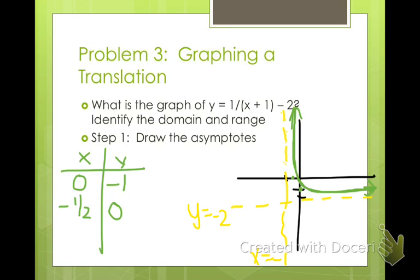And then the other way we have, let's put in negative 2. Negative 2 plus 1 is negative 1. And 1 divided by negative 1 is negative 1. Minus 2 is negative 3. So we have negative 2, negative 3. It's going to make this same shape over on this side. So it's the same thing except translated left and down.